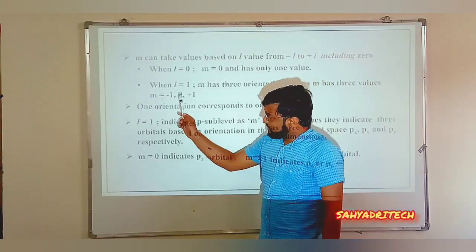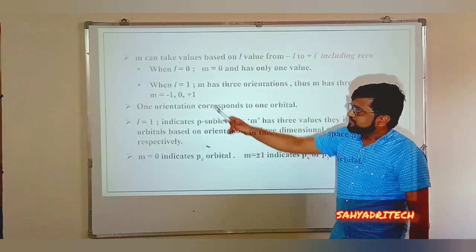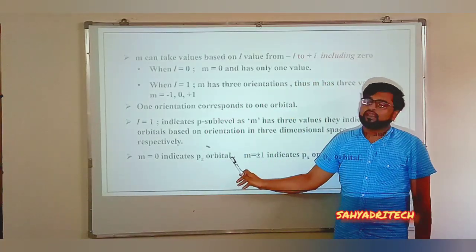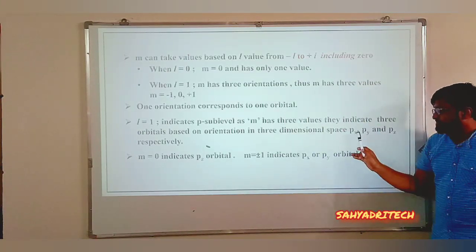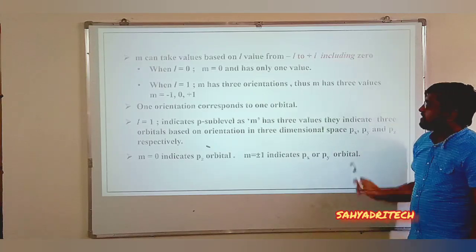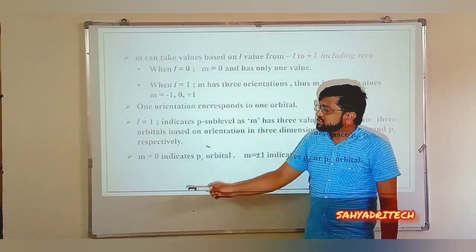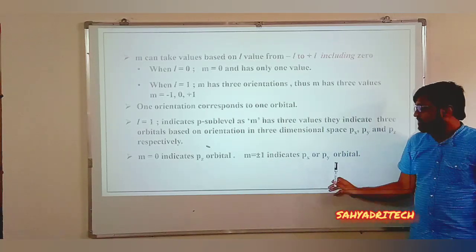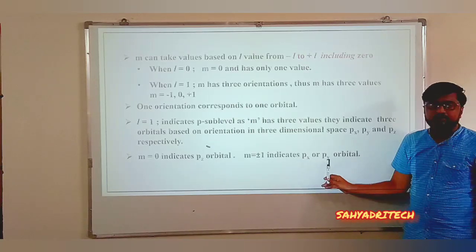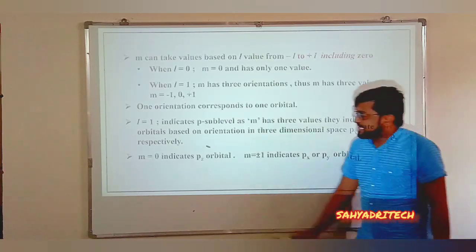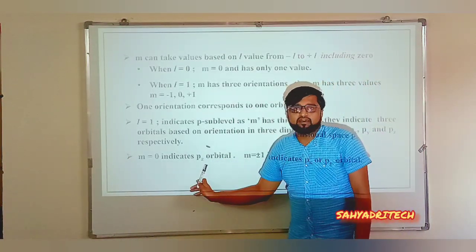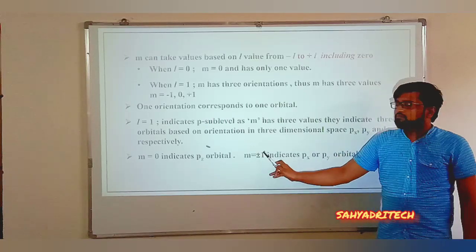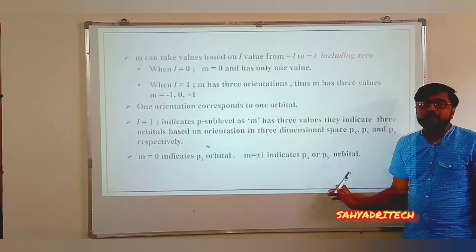Considering the values of M for the p subshell: M = 0 indicates the Pz orbital, and M = ±1 indicates either the Px or Py orbital.